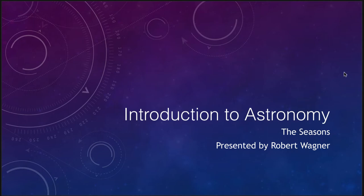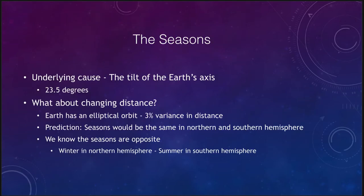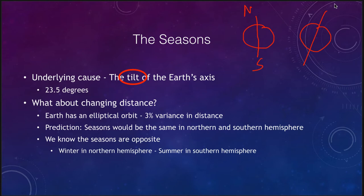What is the cause of the seasons? The underlying cause is the tilt of the earth's axis. The earth is tilted — not going straight up and down with a north pole and a south pole, but tilted at an angle instead. There are times when the north pole is leaning towards the sun and times when it is leaning away, and that is what gives us the seasons. This is the 23 and a half degree tilt of the earth's axis.